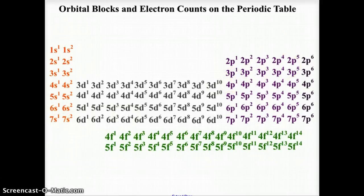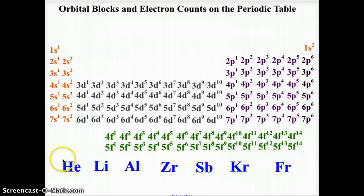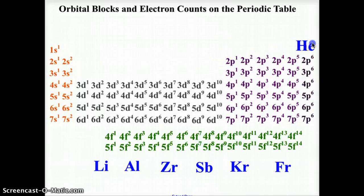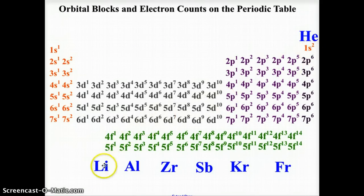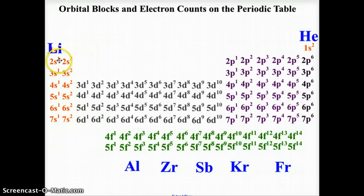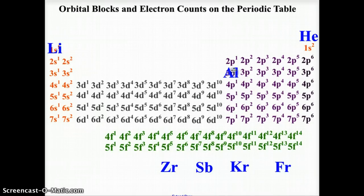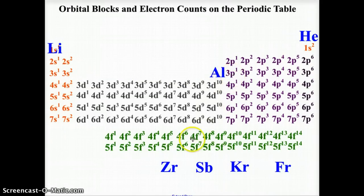So let's look at how we might do this. Helium — if we put helium on the periodic table, we notice that it is in the 1s2 position, giving us two valence electrons. Lithium, here in the second row, first column, would be 2s1, giving us one valence electron. Aluminum would sit here at 3p1, right here in the third row, giving us the s2 and the p1, making three valence electrons.